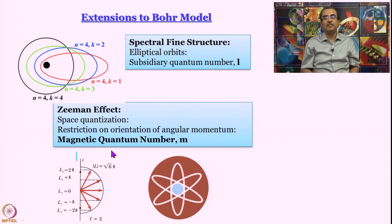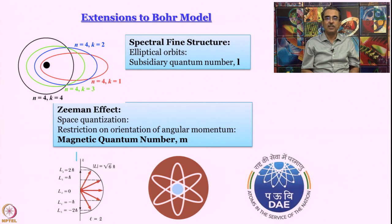And how many values of m can be there? That was also determined—you can have 2l plus 1 values. What does m determine? m determines the z component of angular momentum. Remember, we are going to come back to this. This model gave rise to a lot of excitement. You can see this kind of picture in many places, including the logo of our department of atomic energy.